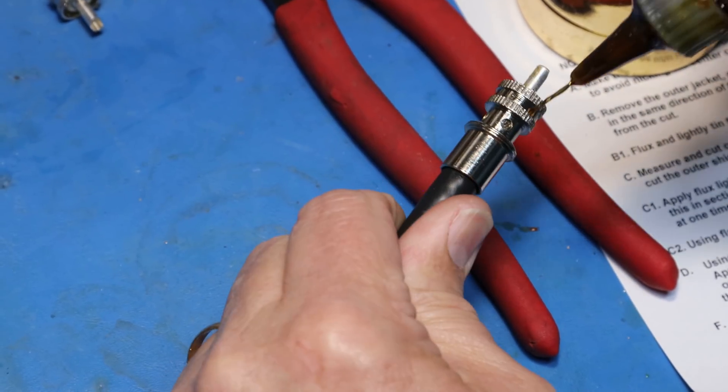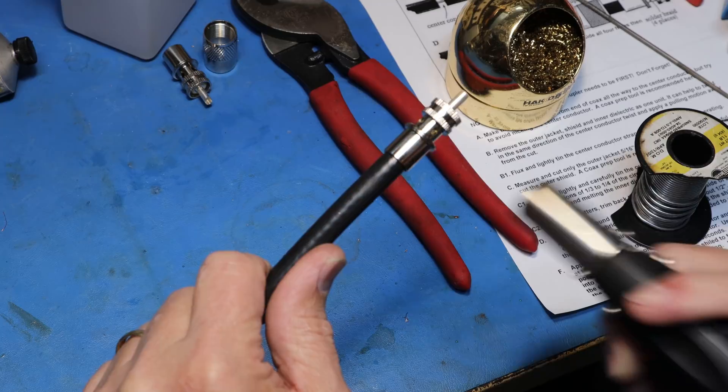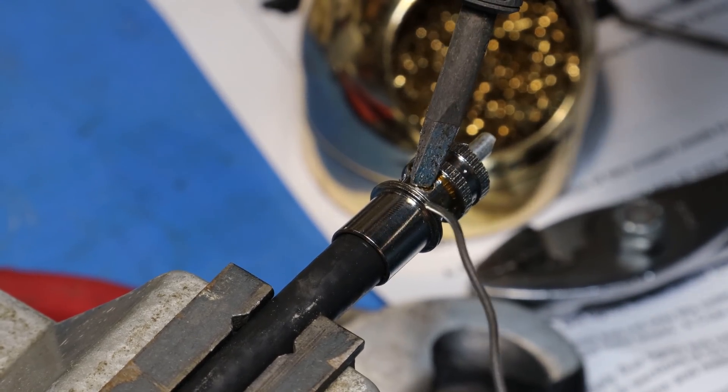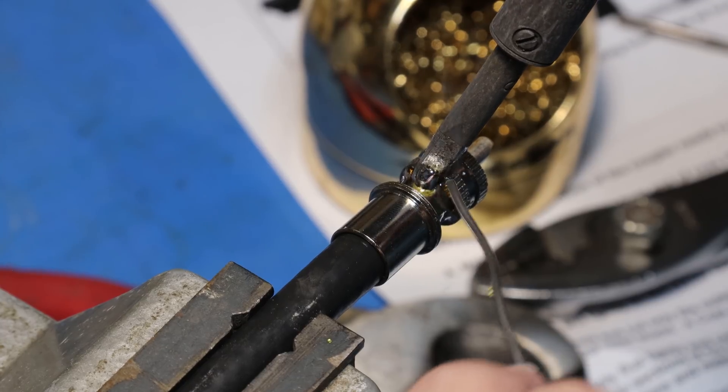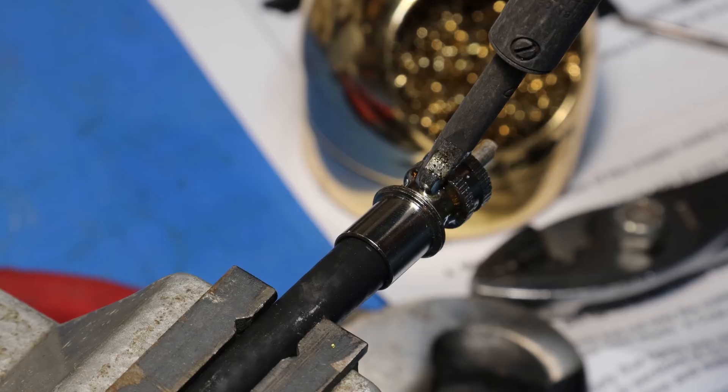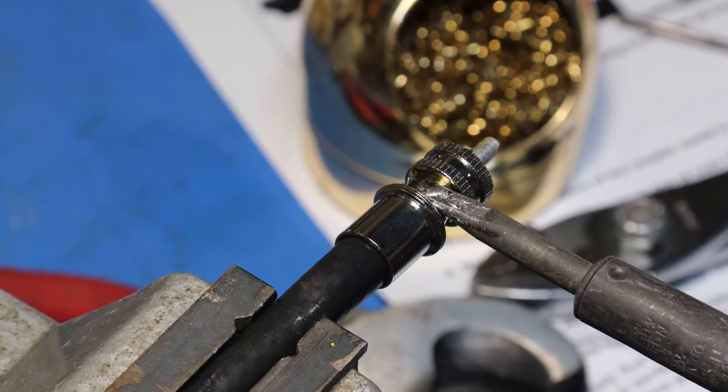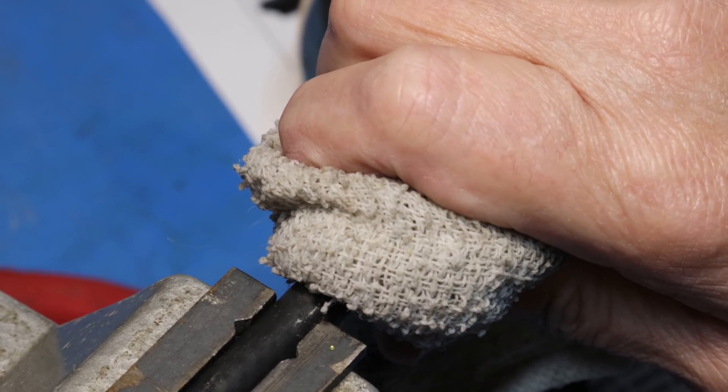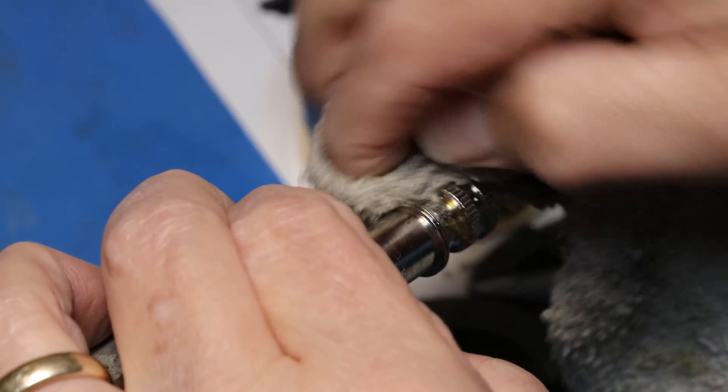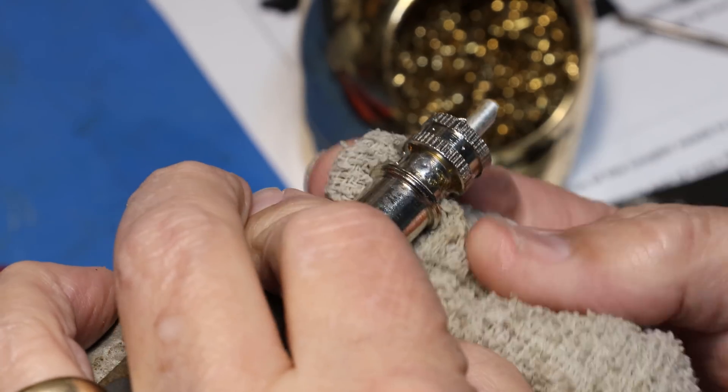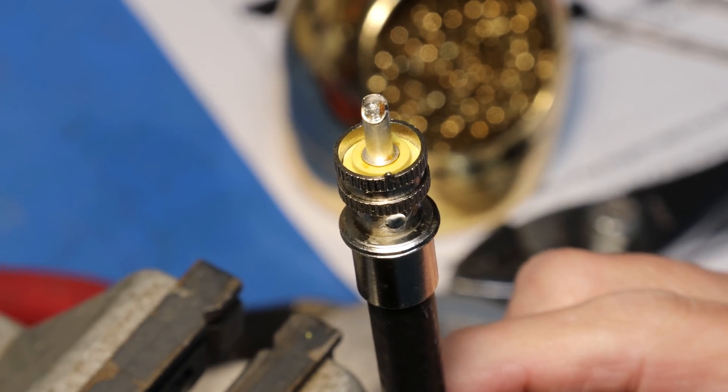Now we will apply some flux to the braided shield and preheat the connector a bit with a butane torch. Again, we will feed the solder in through the small hole and we will repeat for all four holes. It is a good idea to keep the rag handy to cool the connector once it has been soldered to keep from melting the dielectric. We will also take this opportunity to clean any flux left over from soldering off of the connector. Your solder joints should be smooth and clean.